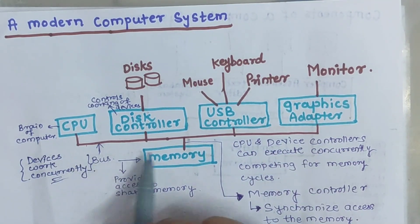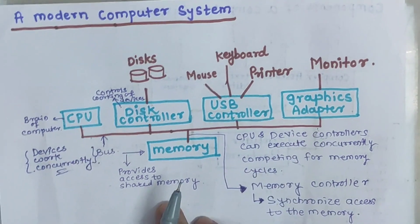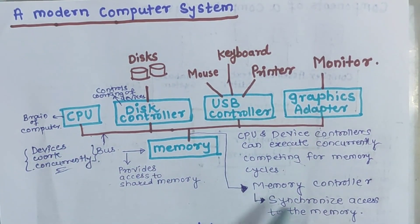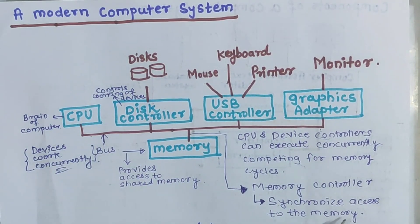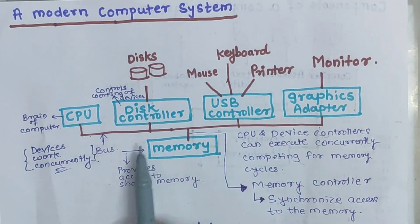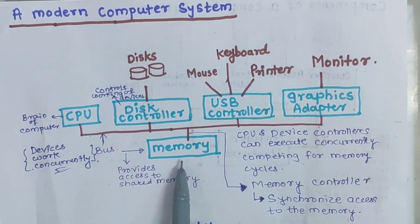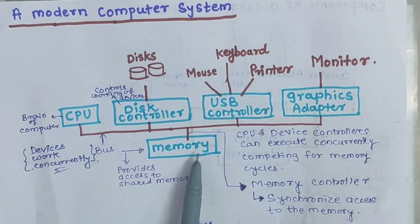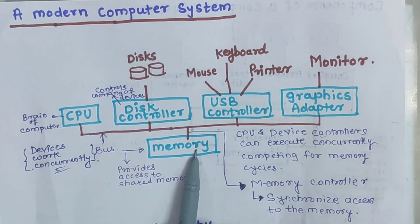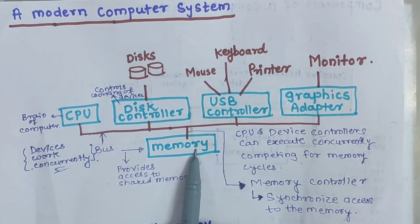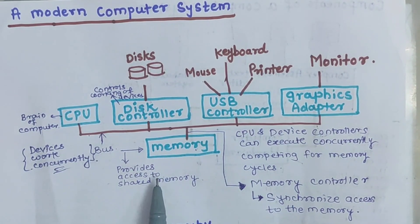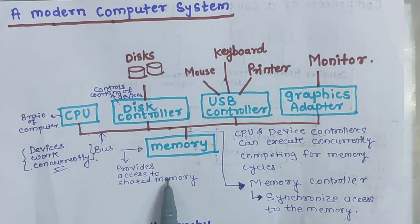This shared bus and the memory controller control the various devices and synchronize the access to the memory. Memory is of two types: primary memory and secondary memory. Whatever computation tasks are to be done, data is first loaded into the primary memory, that is, the main memory. And once the task is done, data is shifted back to the secondary memory.